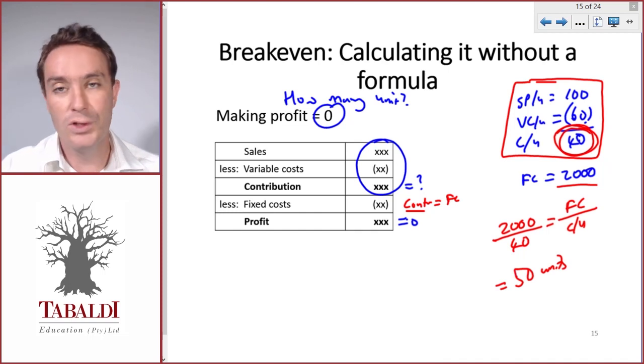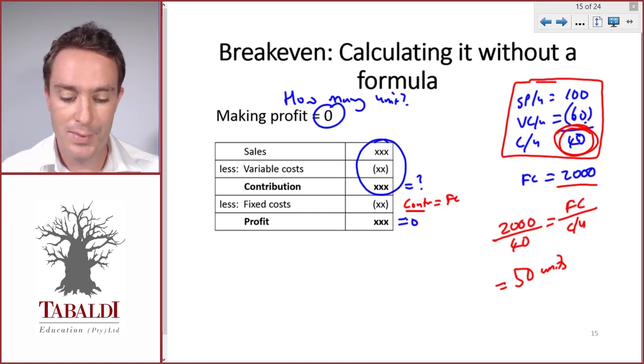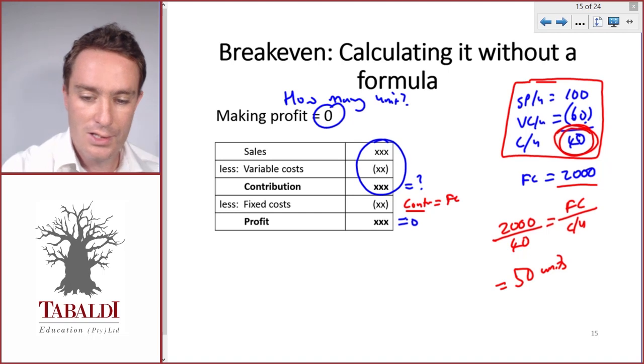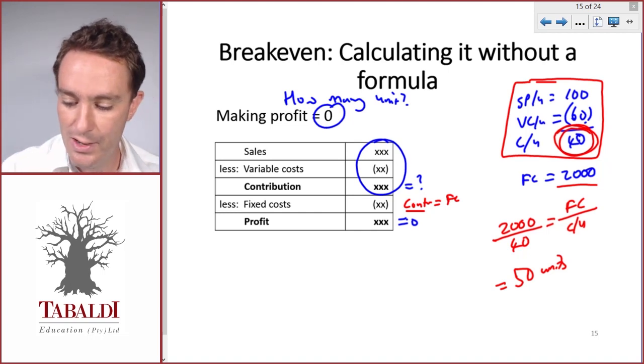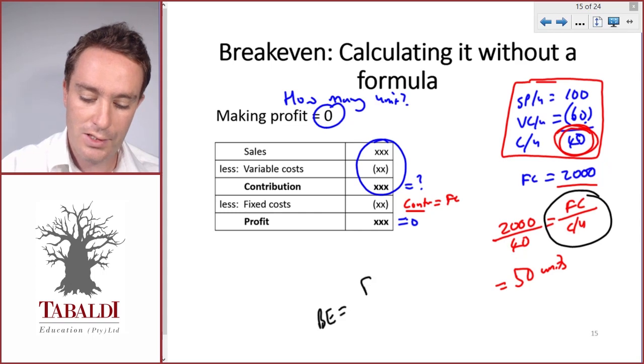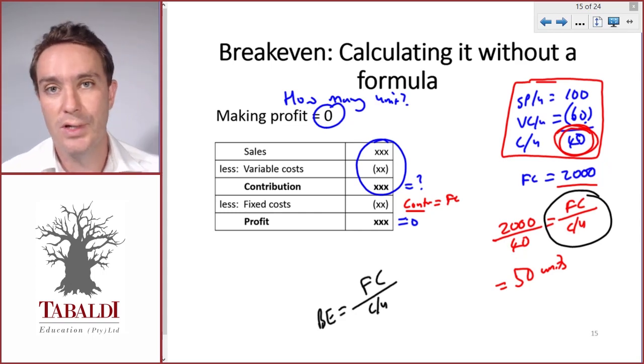We have fixed costs divided by contribution per unit, and that will give us the number of units at 40 per unit that will make our contribution 2,000, which is equal to our fixed costs, so they eliminate and leave a profit of zero. We've now determined our formula for break-even: break-even units equals fixed costs divided by contribution per unit.